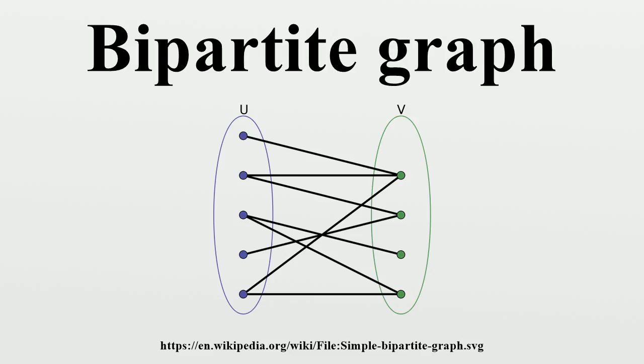Relation to hypergraphs and directed graphs: The bi-adjacency matrix of a bipartite graph is a matrix of size |U|×|V| that has a one for each pair of adjacent vertices and a zero for non-adjacent vertices. Bi-adjacency matrices may be used to describe equivalences between bipartite graphs, hypergraphs, and directed graphs.